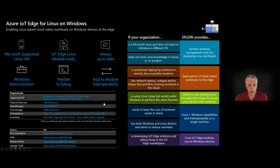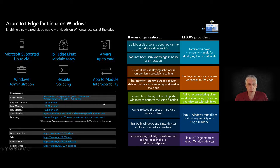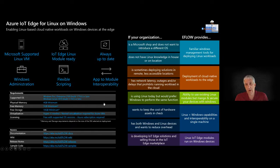Another major difference between eFlow and WSL is the servicing model. With WSL, you've got to acquire your own userland through the Windows Store, and that spins up dynamically based on whatever userland you want to use. The underlying process manager differs as well: eFlow uses systemd, which is built for managing Docker-type environments with Docker containers and can spin up child processes. Whereas WSL is really meant for a single process launch, uses Sysinet as its process manager, and does not support child processes.